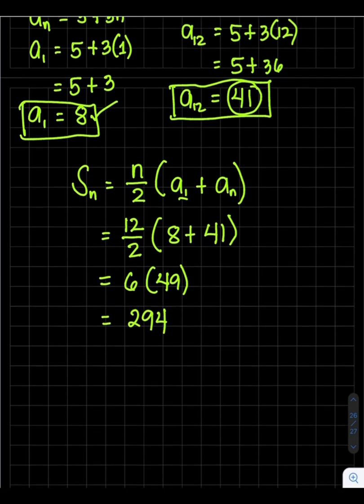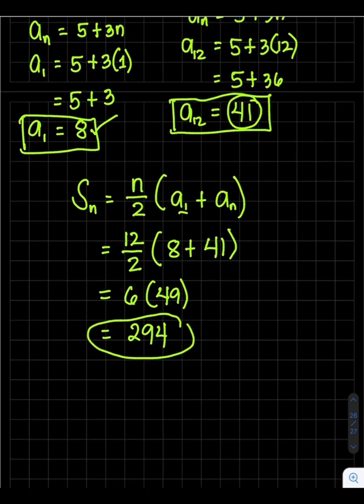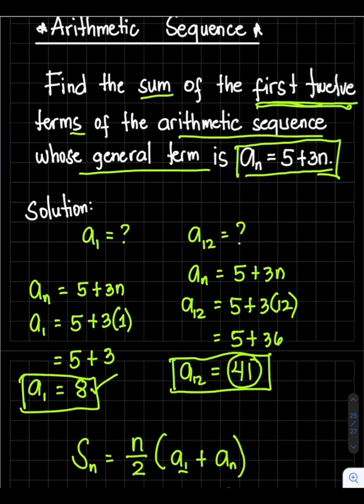Therefore, the sum of the first 12 terms of the arithmetic sequence is 294, based on this given problem.